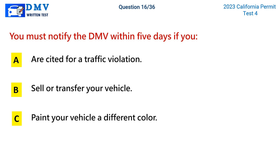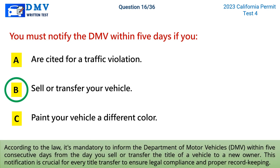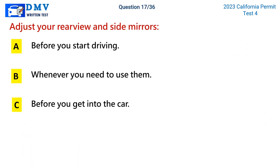Question 16: You must notify the DMV within five days if you. A) are cited for a traffic violation, B) sell or transfer your vehicle, C) paint your vehicle a different color. The correct answer is B. According to law, it's mandatory to inform the Department of Motor Vehicles within five consecutive days from the day you sell or transfer the title of a vehicle to a new owner. This notification is crucial for every title transfer to ensure legal compliance and proper record keeping.